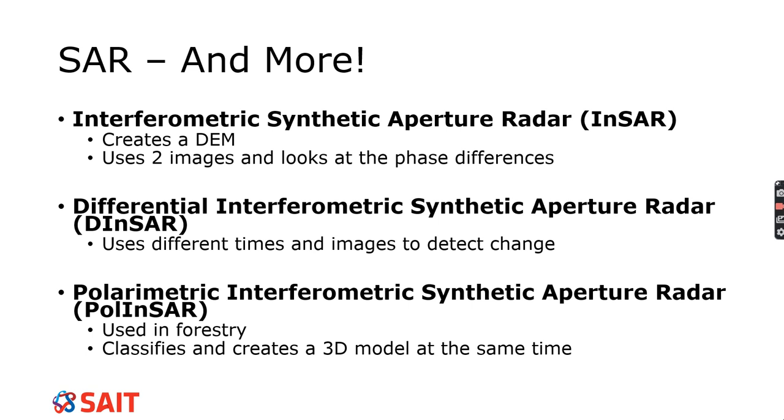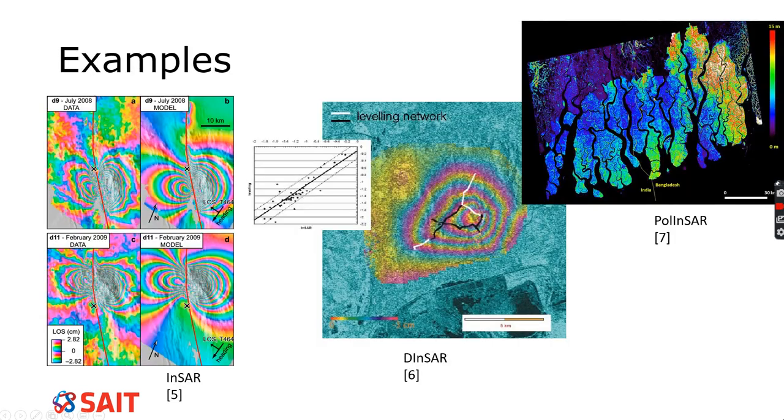Then the last one is combining it all together is polarimetric, interferometric synthetic aperture radar, which is PolInSAR. This is used a lot in forestry more commonly. What it does is it classifies at the same time as measures. So we can say, this is how big my tree is, and this is the type of tree it is. So here's some examples of them, some pretty pictures. So here's interferometry. So this is InSAR. This is DInSAR. So it's showing shifts along some faults. And this is PolInSAR. So we have different classifications and different heights as we go. You can see all of that showing up there.